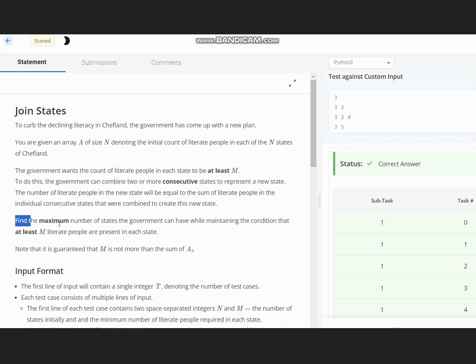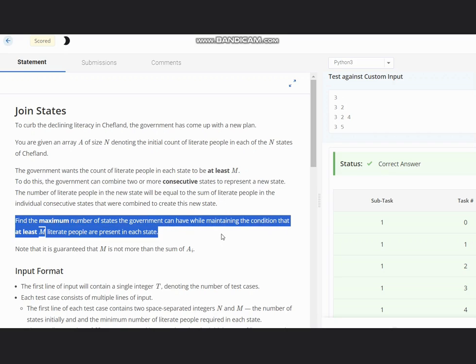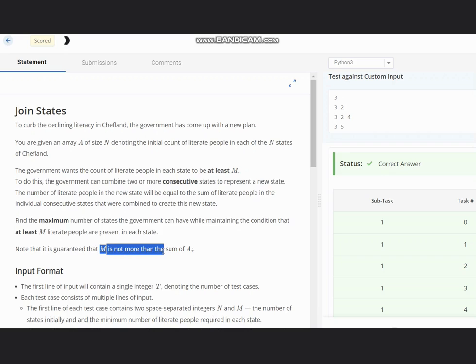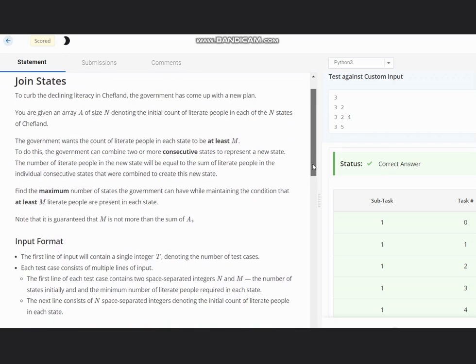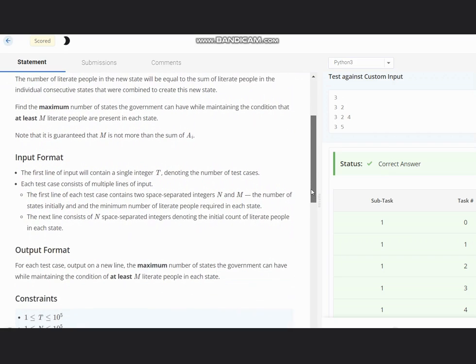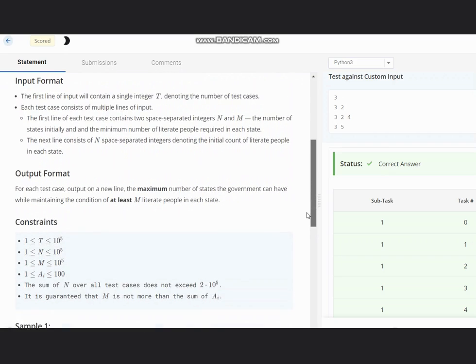So we need to find the maximum number of states government can have while maintaining the condition that at least m literate people are present in each state. And it is guaranteed that m is not more than the sum of a, which means if we sum all the elements of a, m is not greater than it.